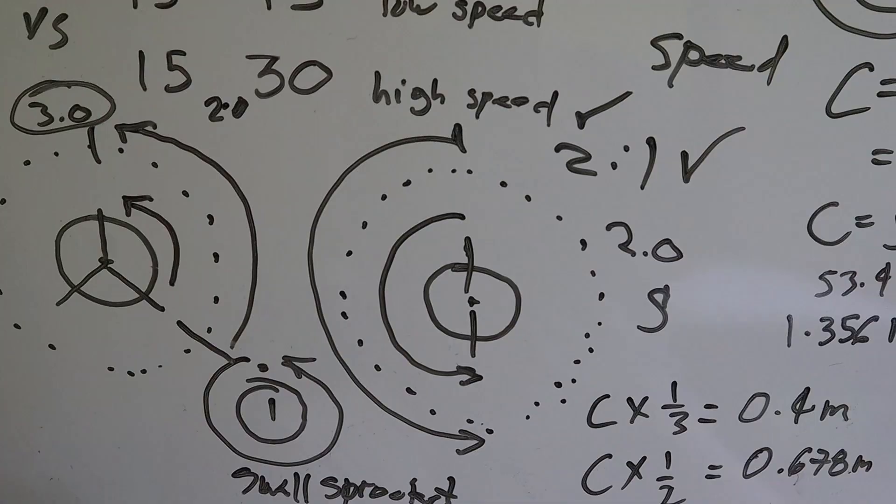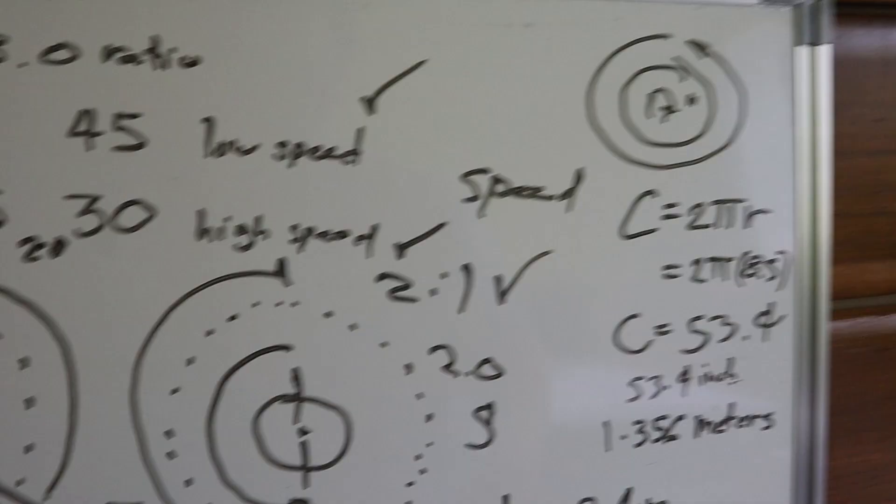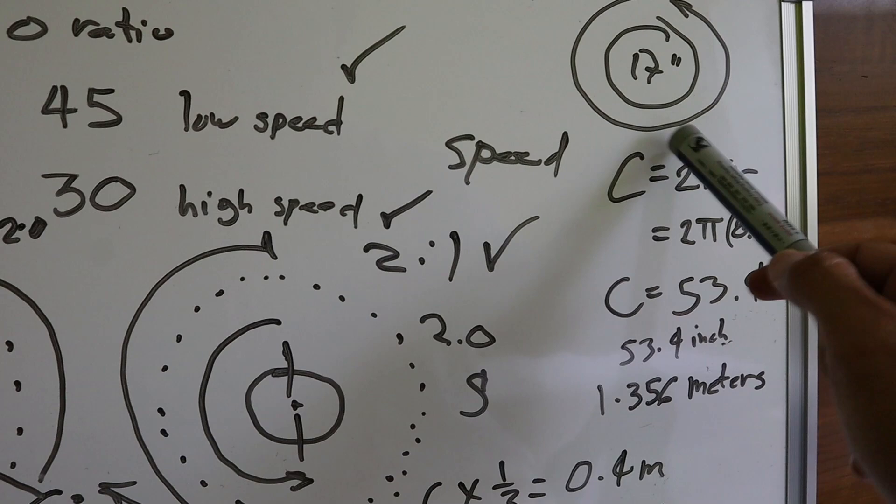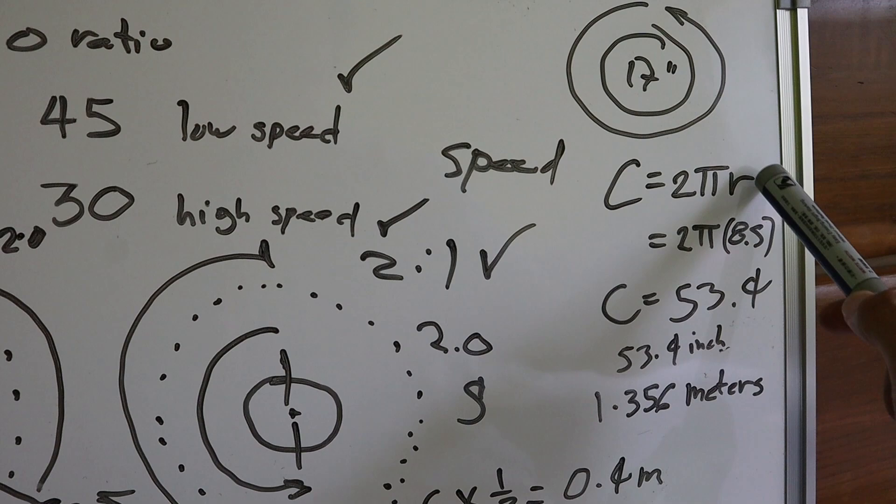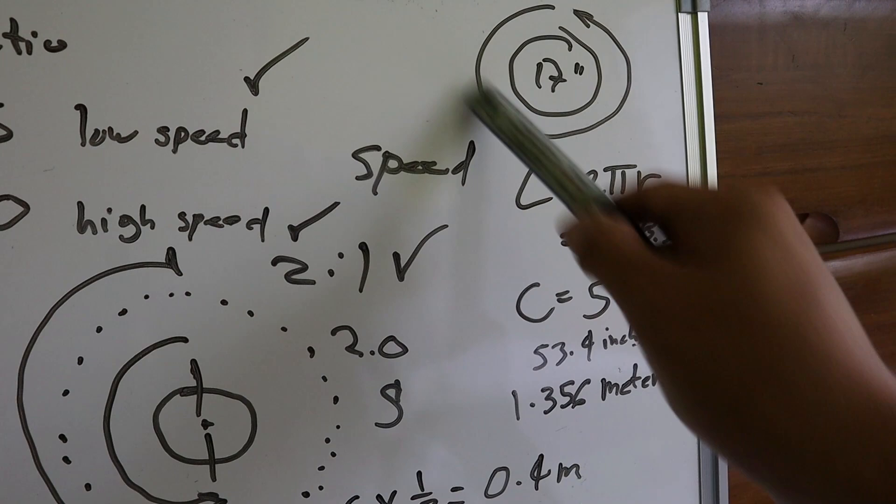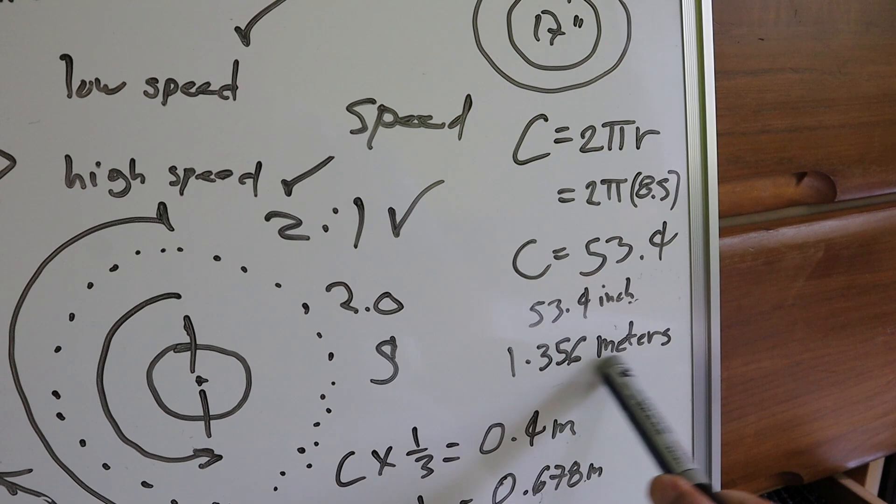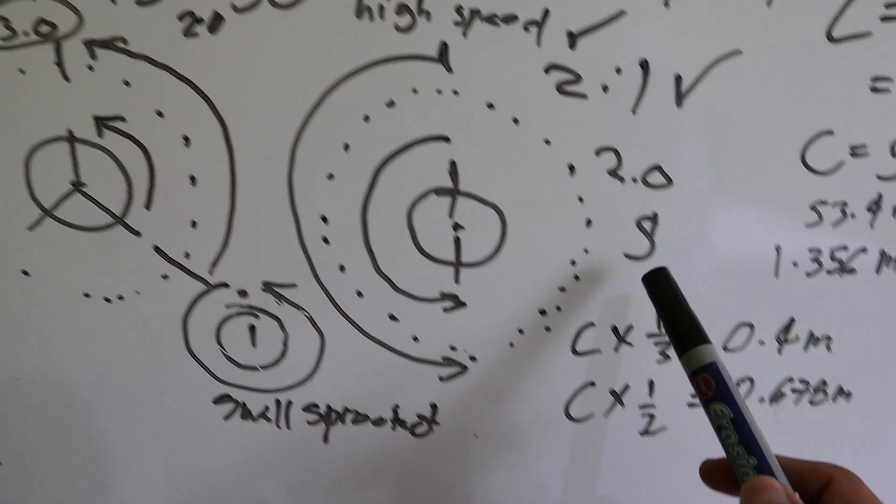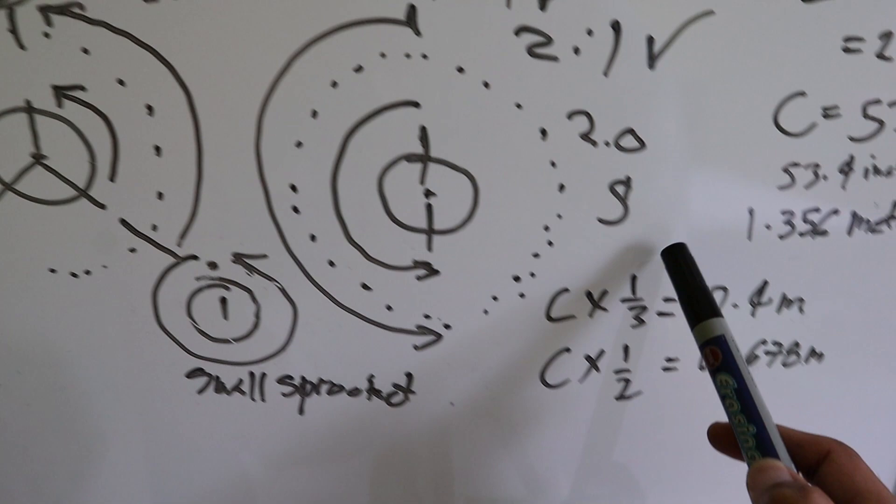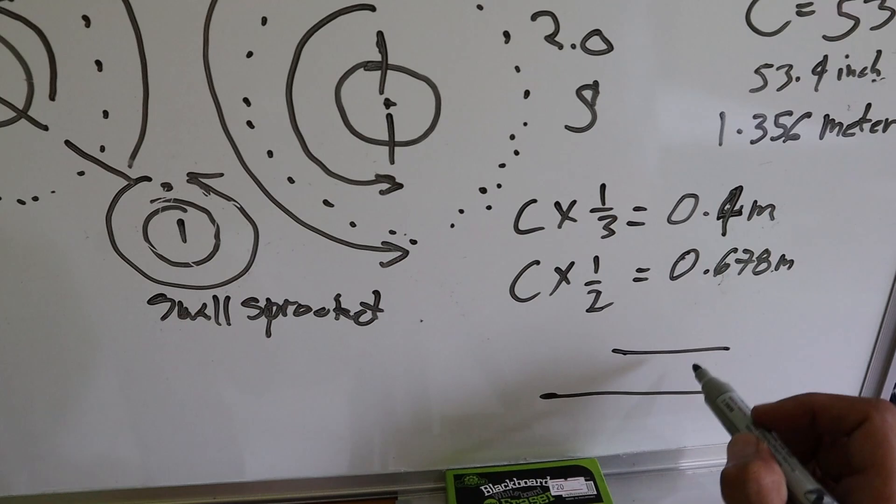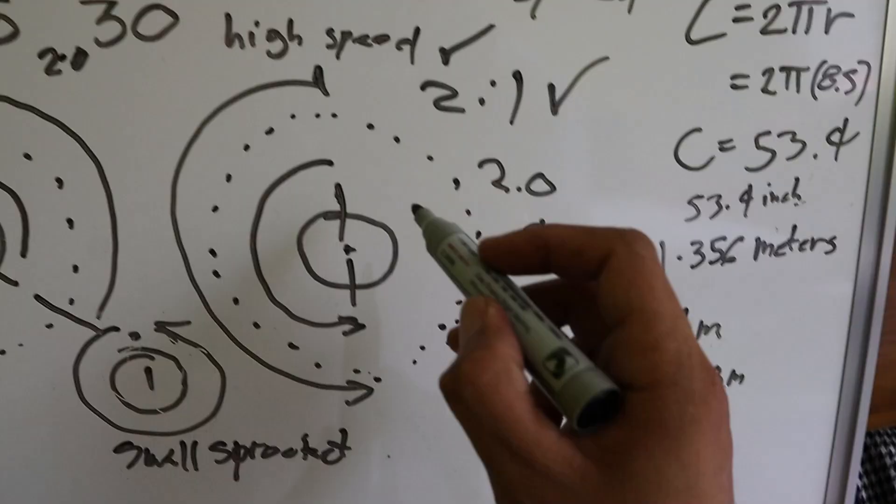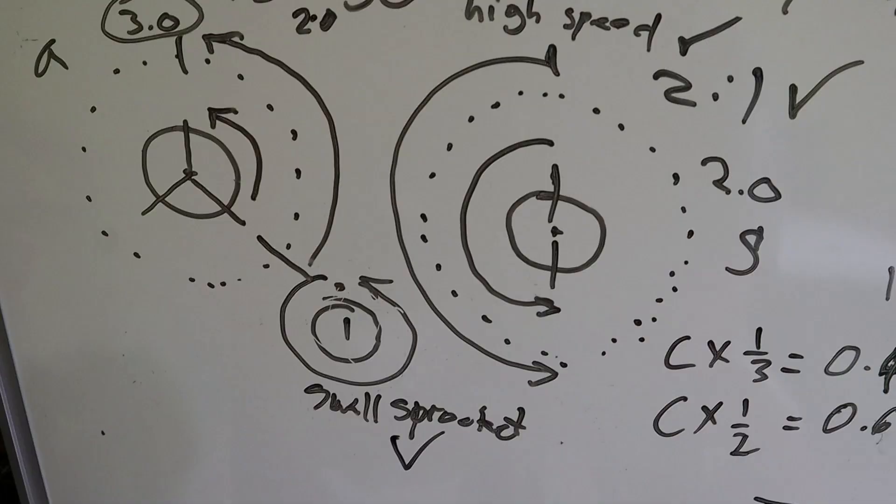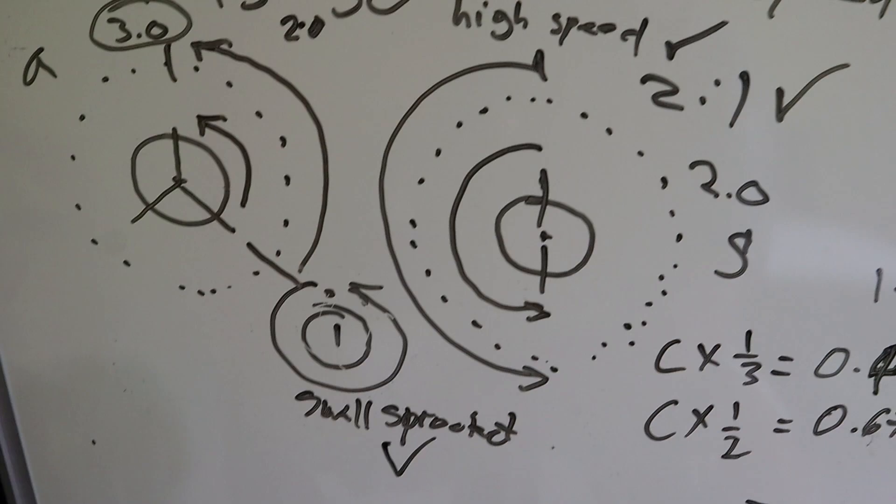Yun lamang ang explanation tungkol dito. Para mas maliwanagan tayo. Formula ng circumference, 2 pi r. Para sa ating 17 inch wheel, i-divide natin yung sa 2 yung ating diameter, 8.5. 2 pi, 8.5, makukuha tayo ng 53.4 inch. I-convert natin sa meters, 1.356 meters yung distance na ng circumference ng ating rims. Sa kada isang revolusyon ng ating engine sprocket, makukuha lamang tayo ng 0.4 meter na distansya sa ating low speed sprocket. Ngayon sa ating high speed sprocket na 2 is to 1, makukuha tayo ng 0.67 na distansya. Yan ang dahilan kung bakit mas mataas ang speed ng ating high speed sprocket. Dahil sa isang revolusyon, mas malayo agad ang distansyang nako-cover ng ating gulong.